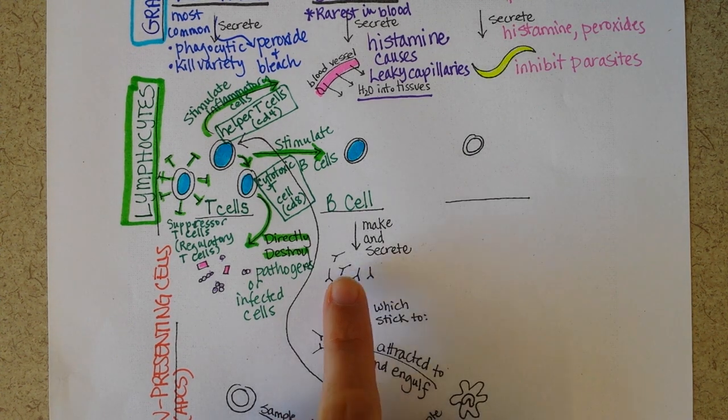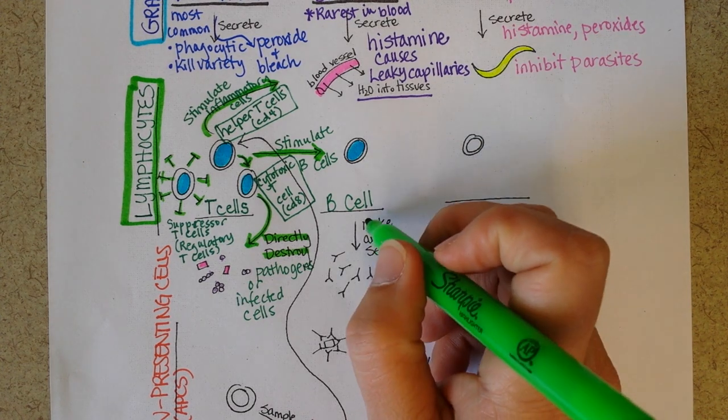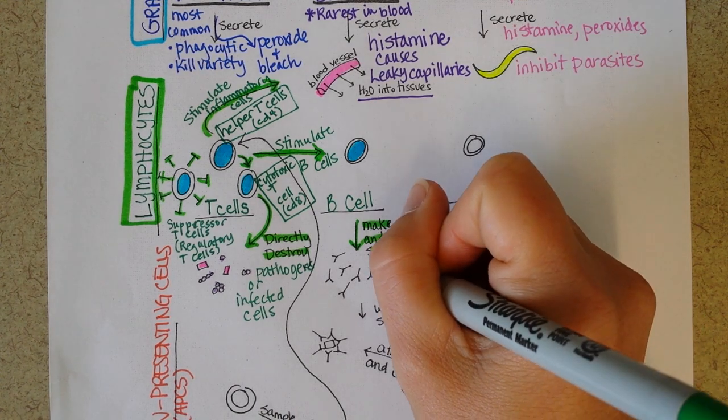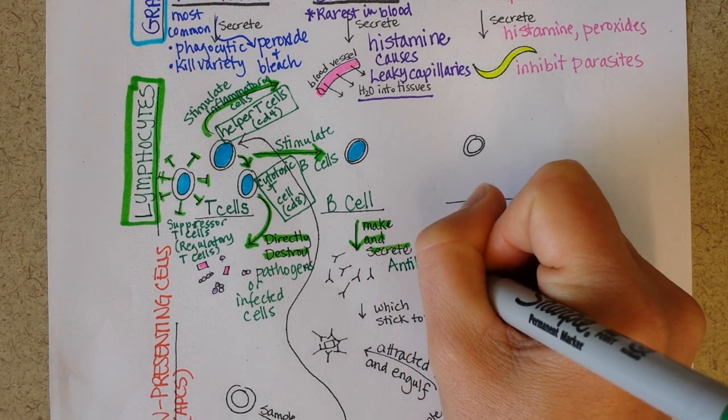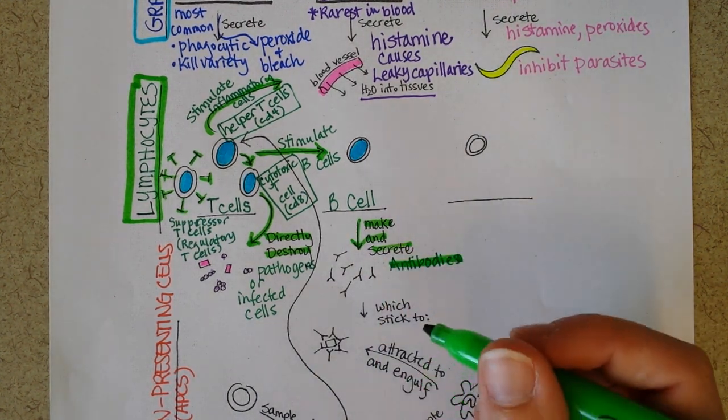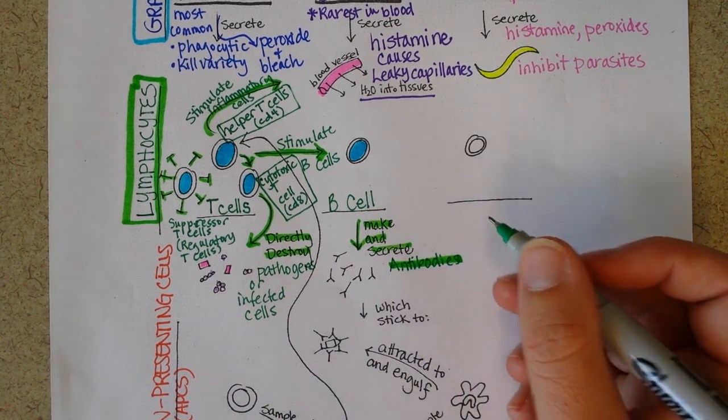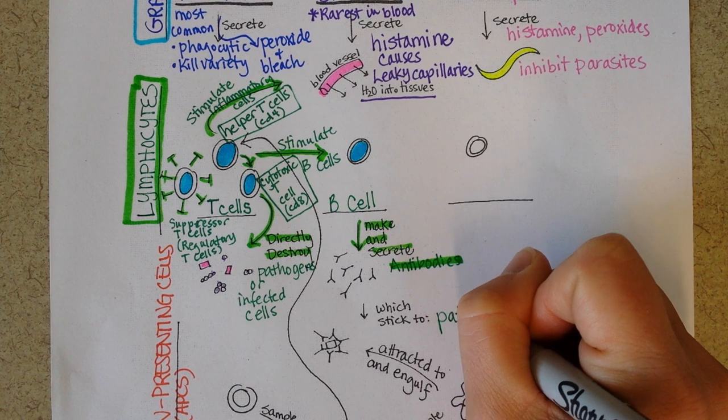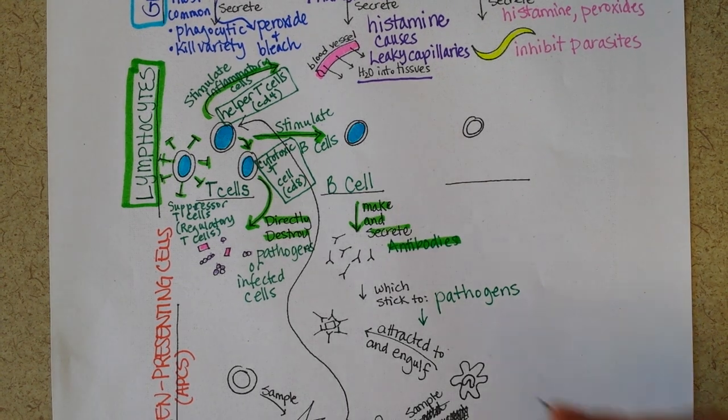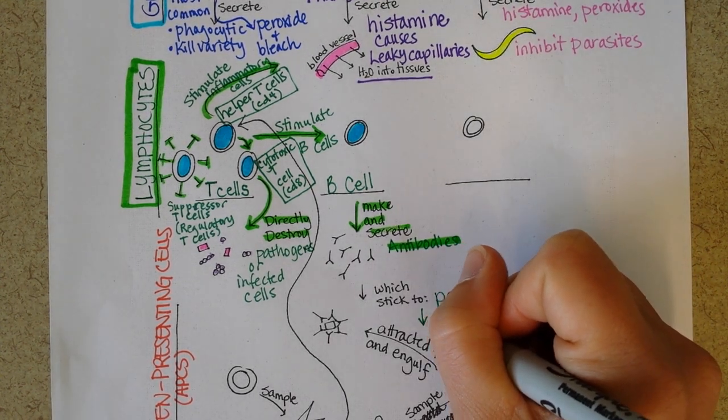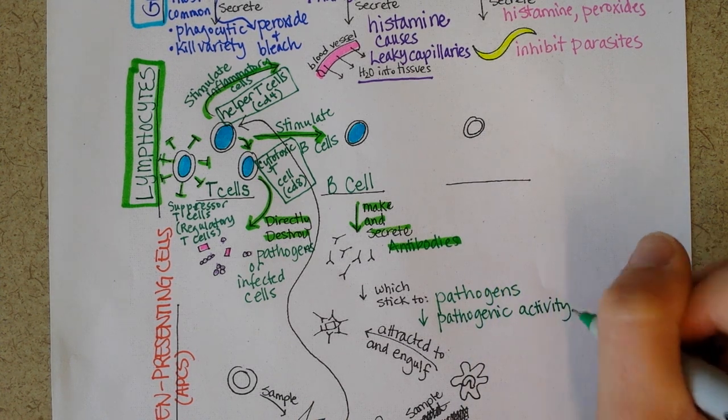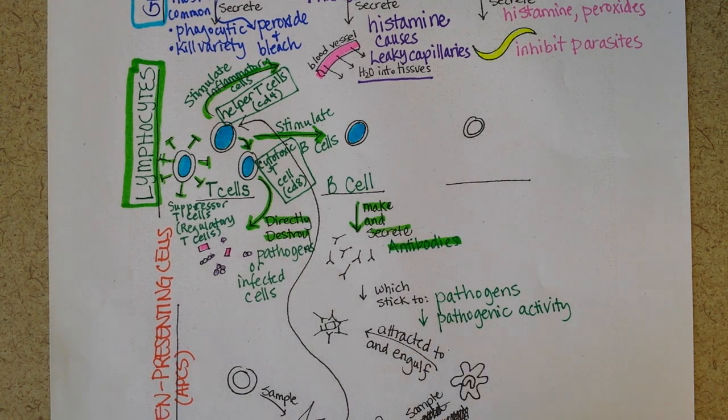Now on to the B cells. They make and secrete antibodies. I'm sort of skipping a step in that they first will differentiate into these giant plasma cells that are just filled with ribosomes that are making antibodies. But the ultimate goal is that you end up with these antibodies, which stick to pathogens. Just binding to pathogens will actually decrease or inhibit pathogenic activity. The bacteria can't do what it needs to do with the monkey on its back, basically, with all these antibodies stuck all over it.